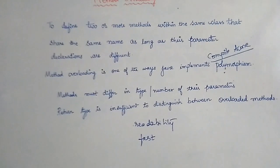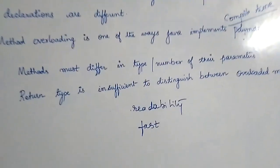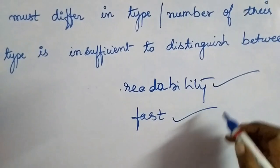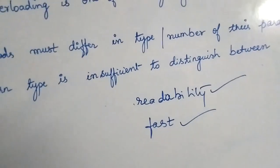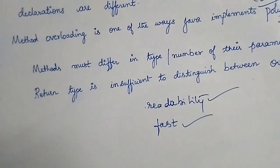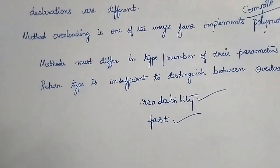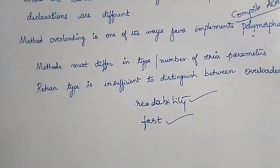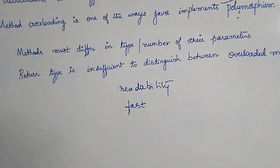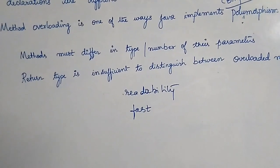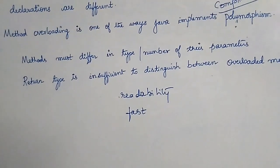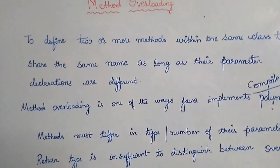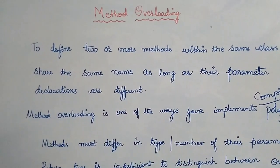The advantages of method overloading are the readability of the code, and overloaded methods are fast because binding happens during compile time. The method call and the actual method are joined by the compiler during compilation. This process of binding the method call to the actual method is called static binding, which happens during compile time.